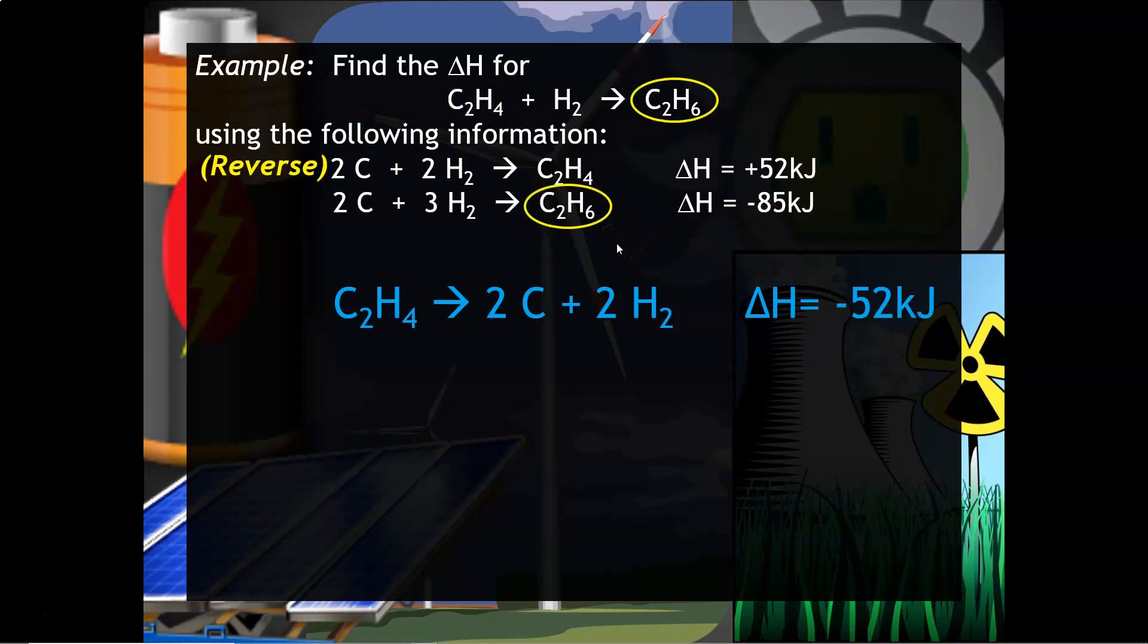Next up is the second equation. A good substance to choose is the C2H6. Notice it is written on the correct side in the overall equation, and it has a coefficient of one as well. So I would say this is going to stay the same. We don't have to make any changes to this. So we're going to rewrite it as is, keeping in mind that we want to show that the arrows are on top of each other. And then since we didn't make any changes, the delta H is going to stay the same as well.